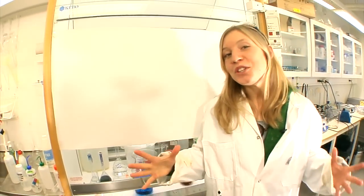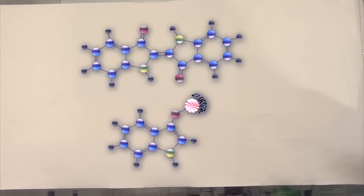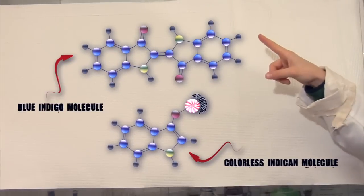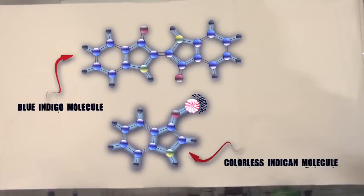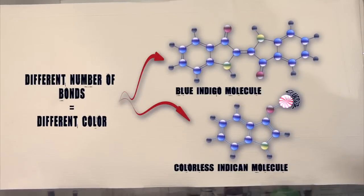All right. When we look at the two molecules again, we can see that the blue molecule is larger and has a greater number of double and single bonds. It is this molecular structure that ultimately makes us see the colors.